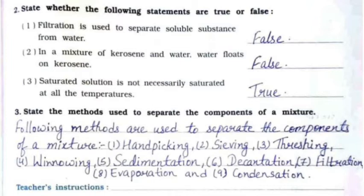Question number 3: state the methods used to separate the components of a mixture. The following methods are used: first, hand picking; second, sieving; third, threshing; fourth, winnowing; fifth, sedimentation; sixth, decantation; seventh, filtration; eighth, evaporation; and ninth, condensation.